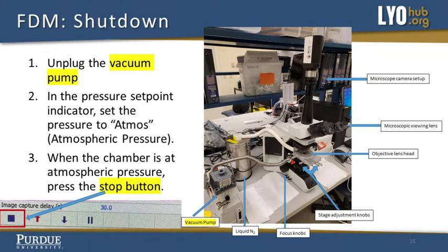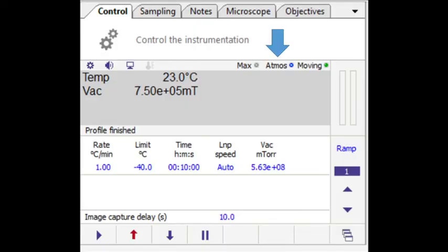In the pressure set point indicator, set the pressure to atmos, atmospheric pressure. When the chamber is at atmospheric pressure, press the stop button to end the data acquisition. Data and video may be exported by right clicking on the generated plots.